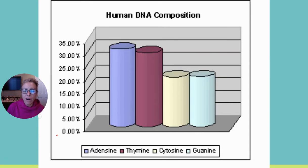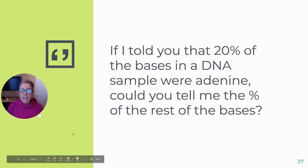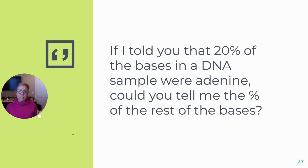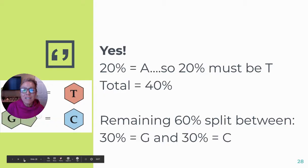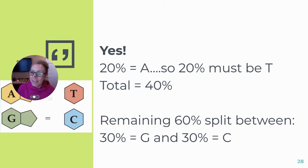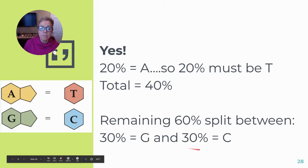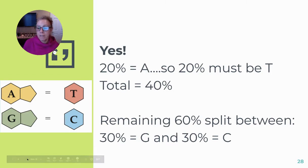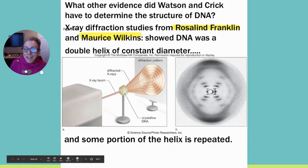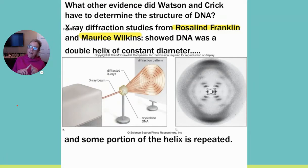Chargaff's rules: the amount of A, T, G, and C varies between species; however, within each species the percentage of A equals the percentage of T, and the percentage of G equals the percentage of C. So if I told you that 20% of bases in a DNA sample were adenine, then thymine is also 20%, totaling 40%. The remaining 60% is split equally between guanine and cytosine — 30% each. Don't be surprised if an exam gives you one percentage and asks for another.